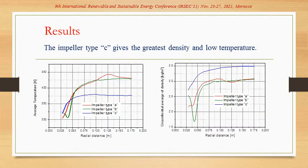As results, we show the circumferential average of temperature and circumferential average of the density and it shown that the impeller tip C gives the greatest density and low temperature.